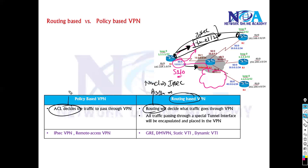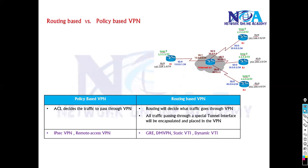In policy-based VPNs there is no tunnel interface, which means everything goes on the same interface, so we require an ACL to separate traffic. This is the main difference between routing-based and policy-based VPNs.